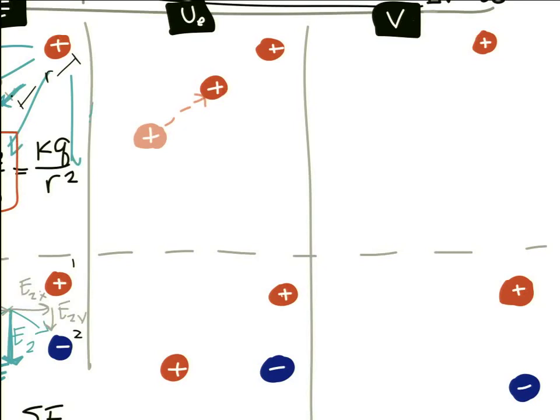Electric potential energy has a lot to do with the work done on the charge, or on the system, to change its configuration. If I took a charge from one location and tried to move it closer to another like charge, I'm going to have to do work on the system. If I'm doing work on the system — adding energy — I must be increasing the potential energy of the system.